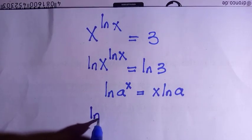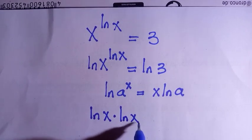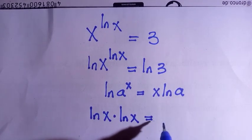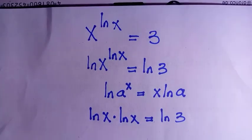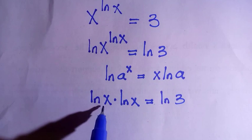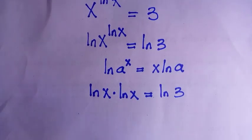So we have ln x dot ln x equals to ln 3, and here we have a product of two ln, so we take one and raise everything to power of 2.